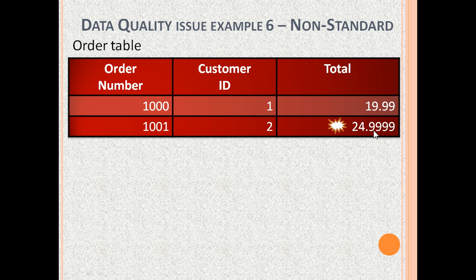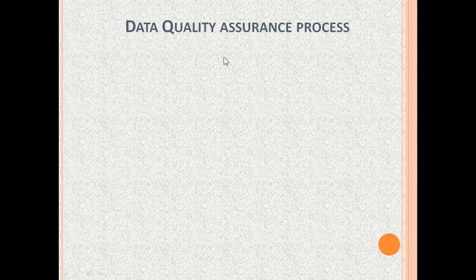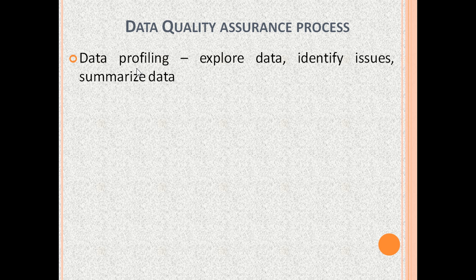Let us see the process of data quality assurance, which can be used by the data quality analyst. It has three main activities. The first is data profiling, which involves exploring the data to understand and analyze it, then identifying data quality issues, and summarizing the data in table row counts, blank values, duplicates and so on. If the data quality issue is widespread, the data quality is poorer. For example, if the customer table has 2% rows missing, the data quality is higher than if the customer table has 20% rows missing.